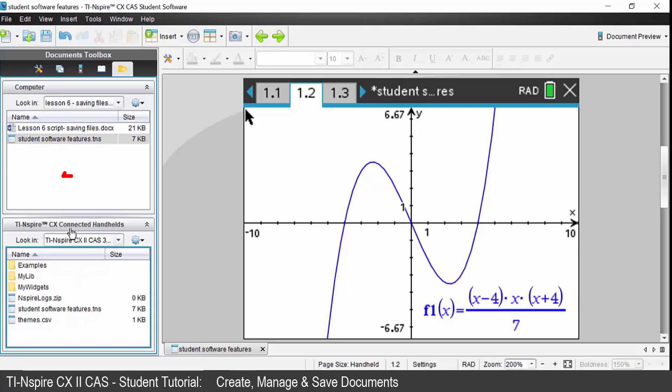To transfer the other way from your handheld back to the computer, simply do the reverse process. Click on your file and drag it back into the computer box on that toolbox. That is all for this lesson. Be sure to check out the other lessons in this series.